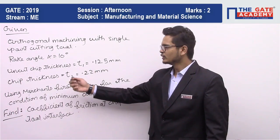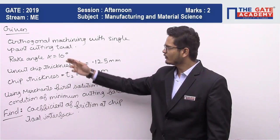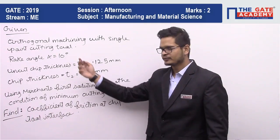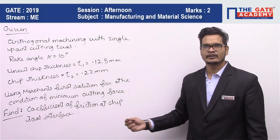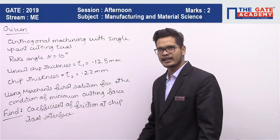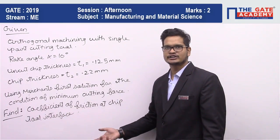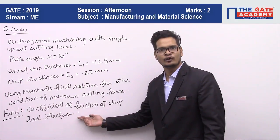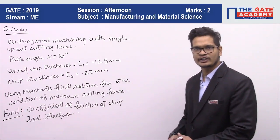R is nothing but T₁ by T₂. So we have found the value of phi, we have got the value of alpha. Now from the Merchant's criteria, we can find the value of friction angle, that is beta. Once we have found the value of friction angle, by using tan beta is equal to μ, we can get the value of coefficient of friction. So let's start with the solution now.